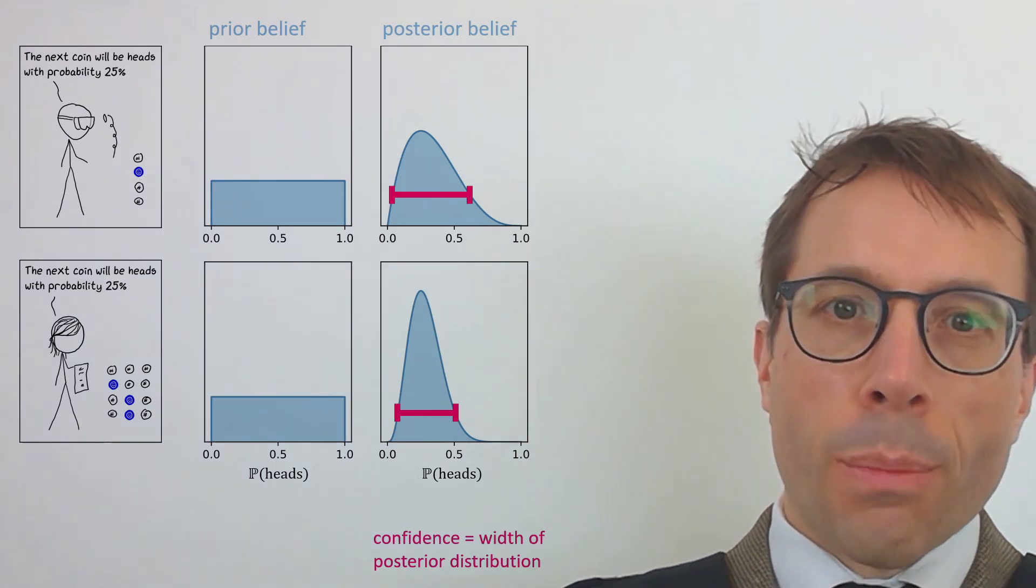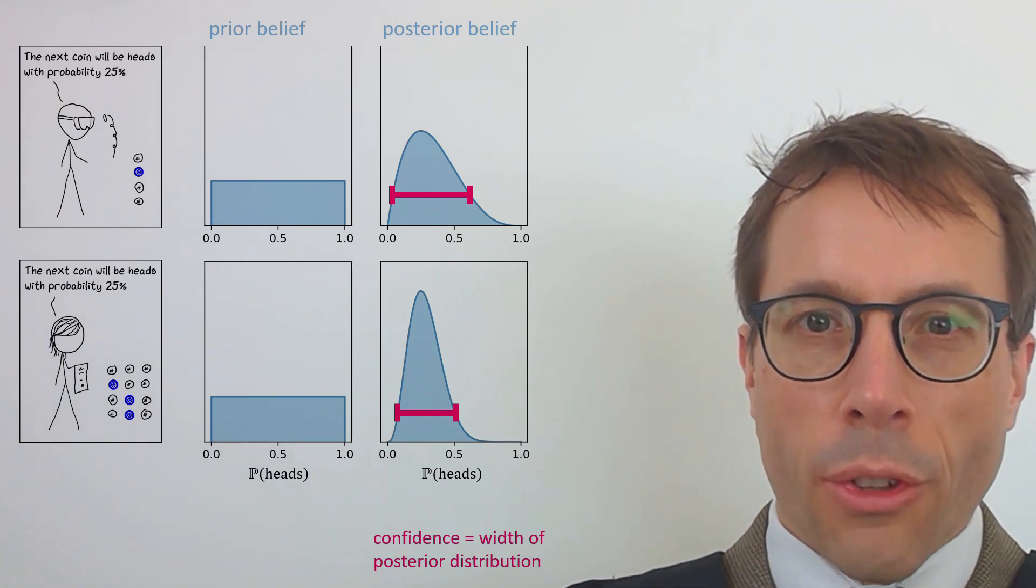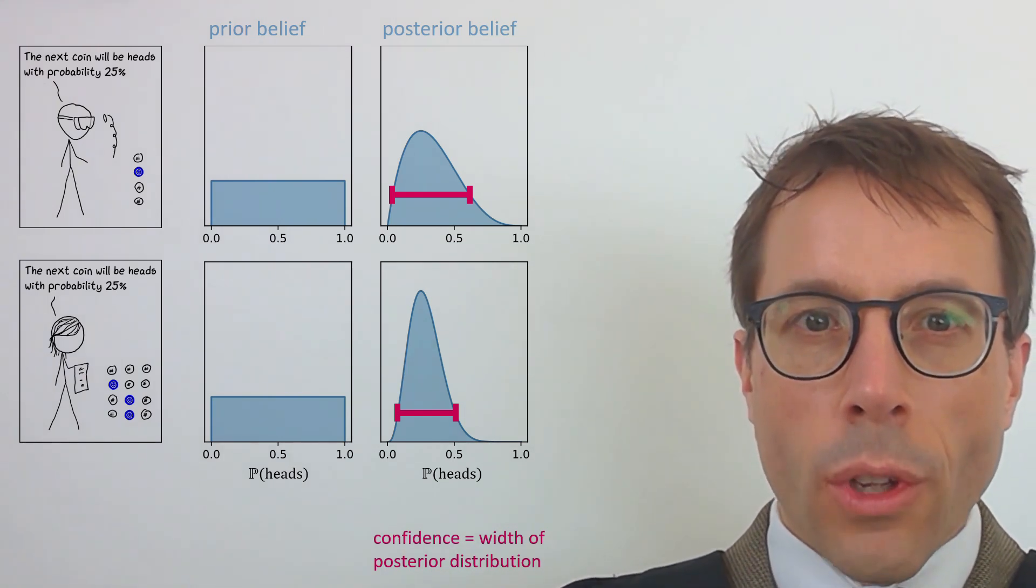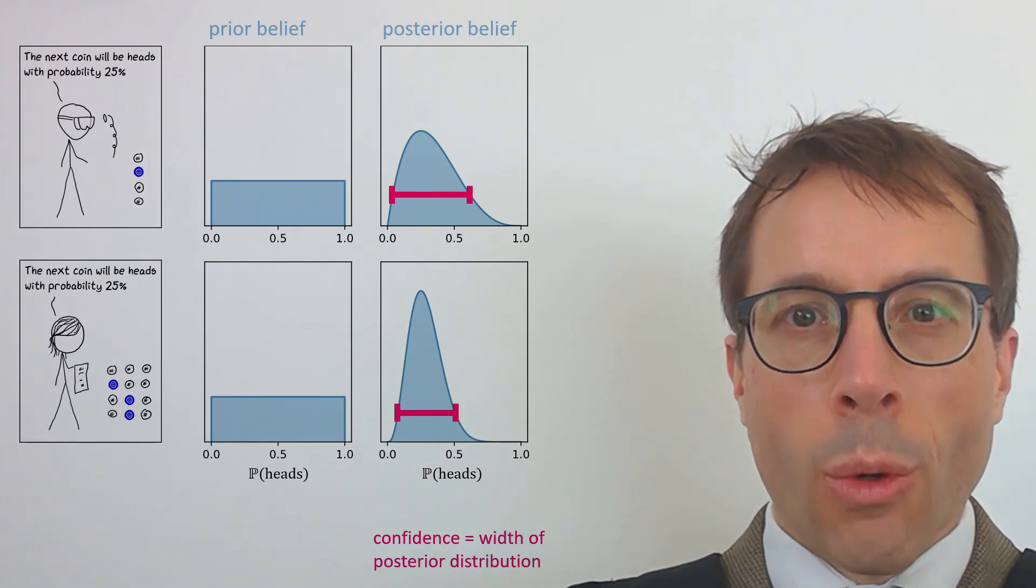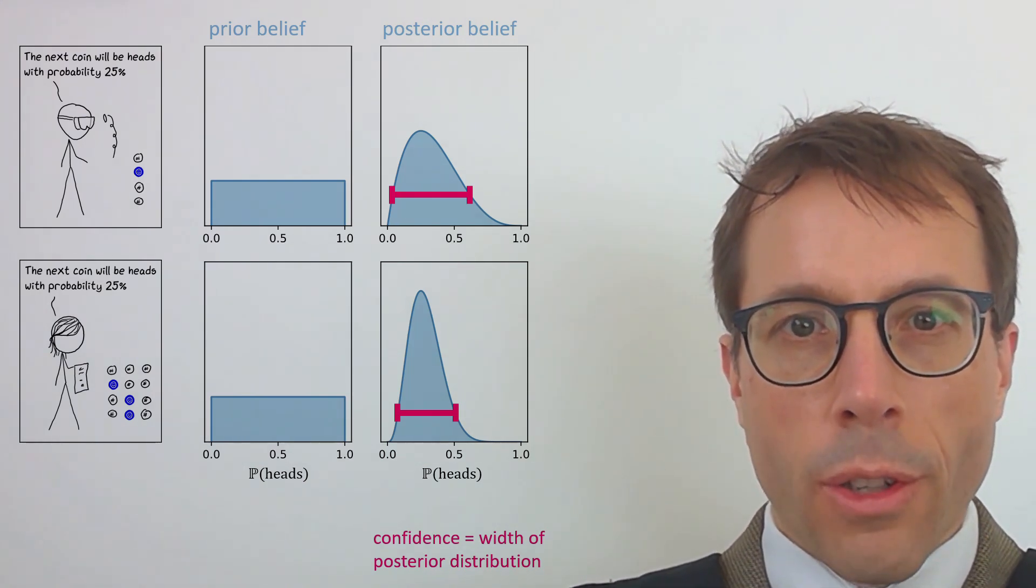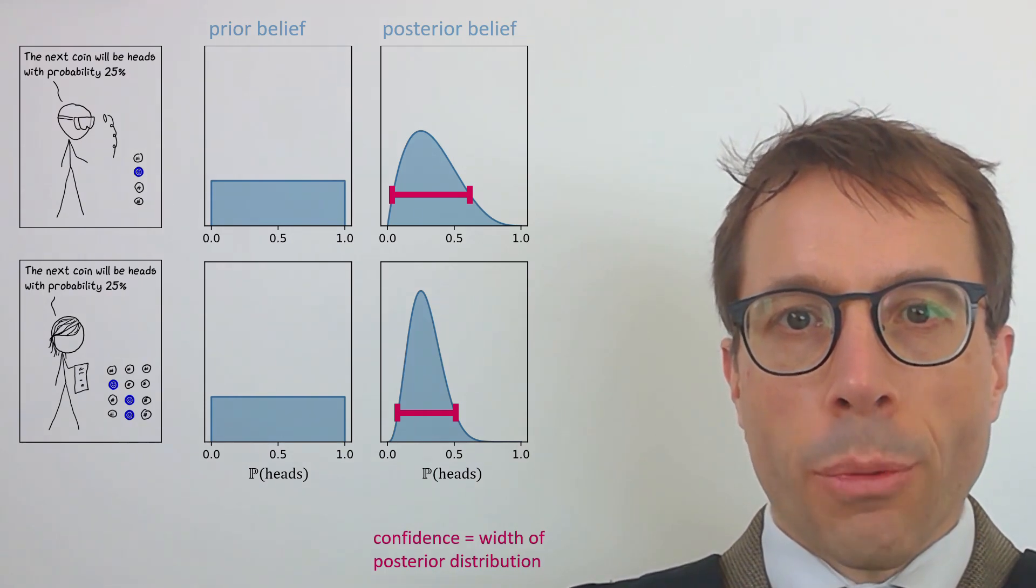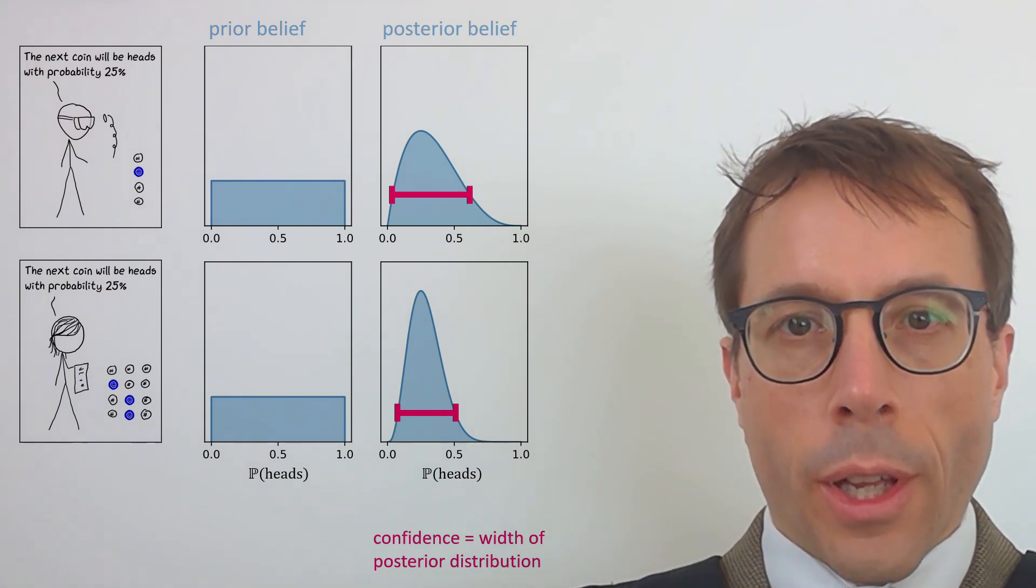This video has been very wordy, trying to explain the philosophy. In the next two videos, we'll do some very practical hands-on Bayesian-style calculations, we'll learn how to actually compute the posterior distribution, and we'll think of sensible metrics for reporting this uncertainty. Thank you.